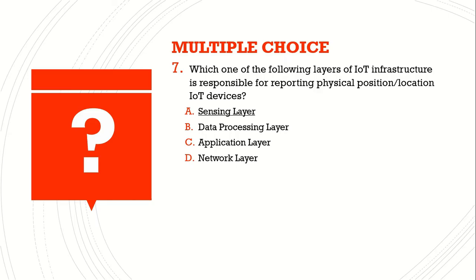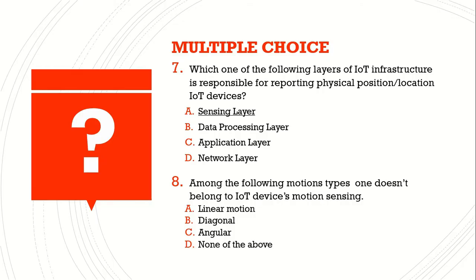Question number eight: among the following motion types, which one does not belong to Internet of Things devices? In IoT devices motion sensing — A) linear motion, B) diagonal motion, C) angular motion, D) none of the above. The answer is B) diagonal motion, because there is no such motion type in IoT.